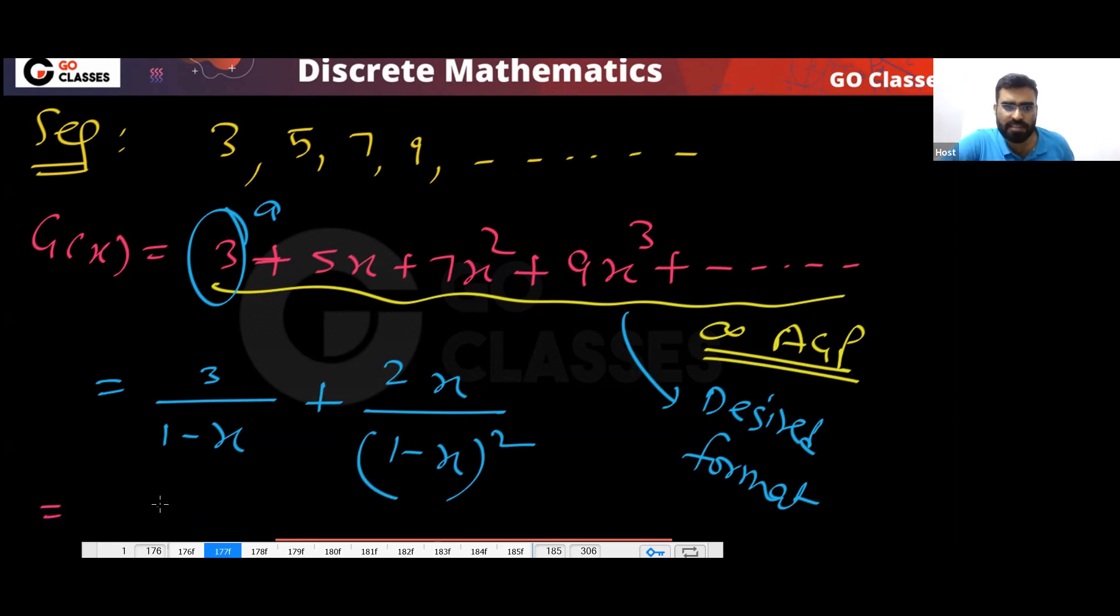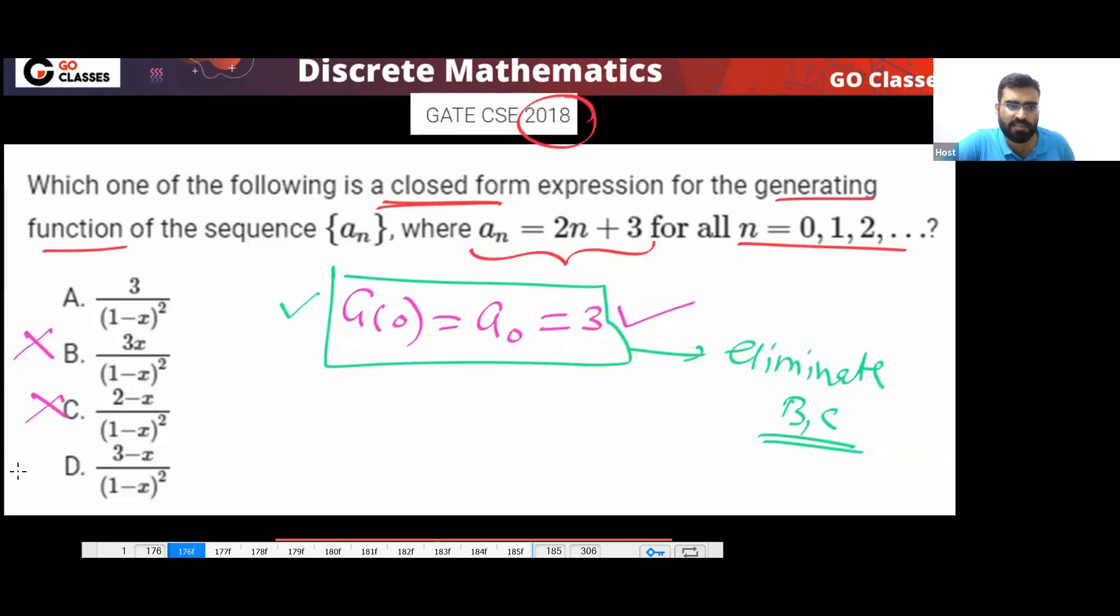So the final answer will be 1 upon (1 - X) whole square, and that will be 3 - 3X + 2X. So it will be 3 - X. So the answer will be option D. Very simple. This is a two mark question and very simple answer, option D.